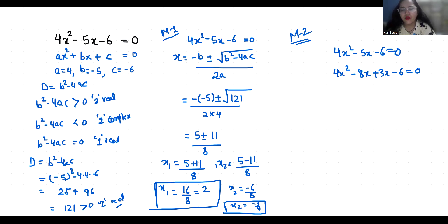From the first 2 terms, if I take 4x as common, I get 4x(x - 2). Now from the next 2 terms, if I take 3 as common, I get 3(x - 2) = 0. Now, x - 2 is common.